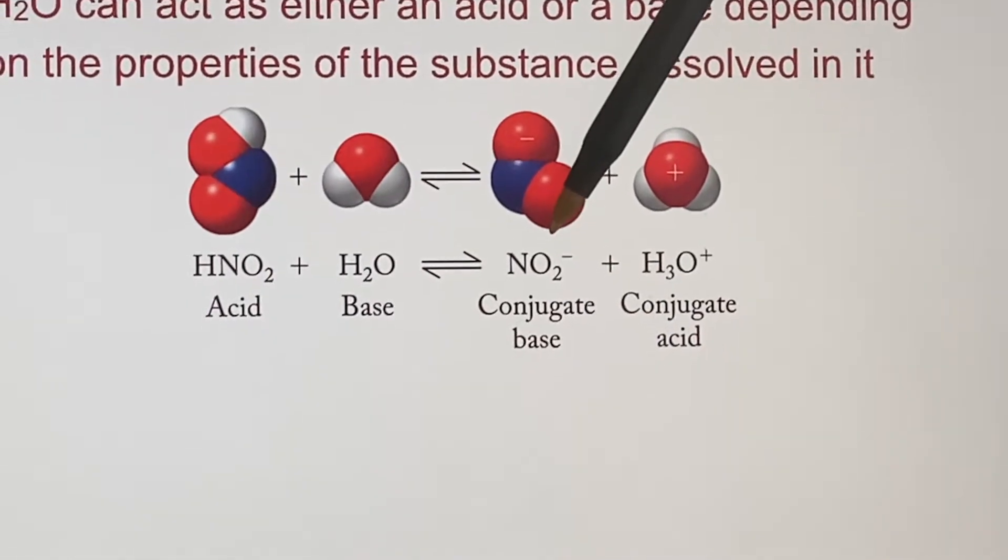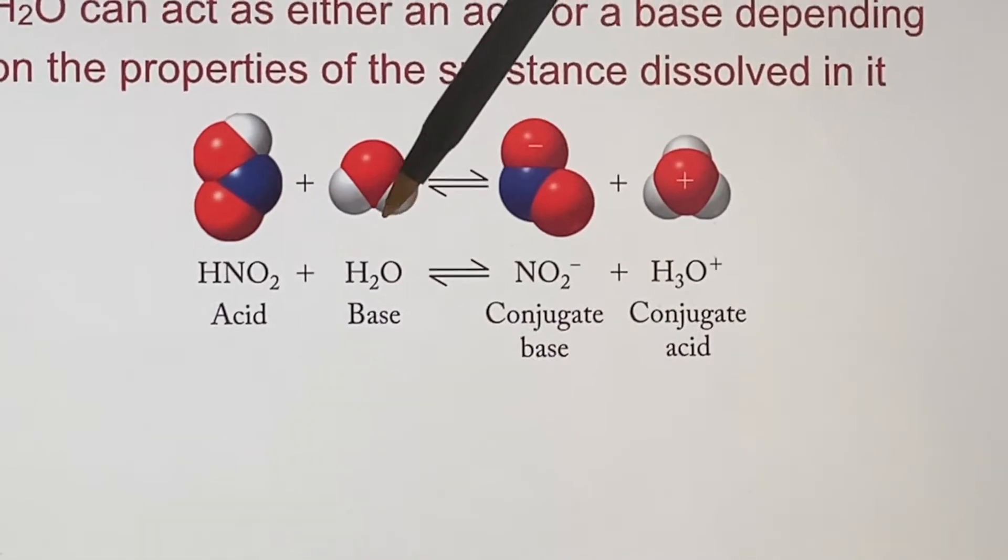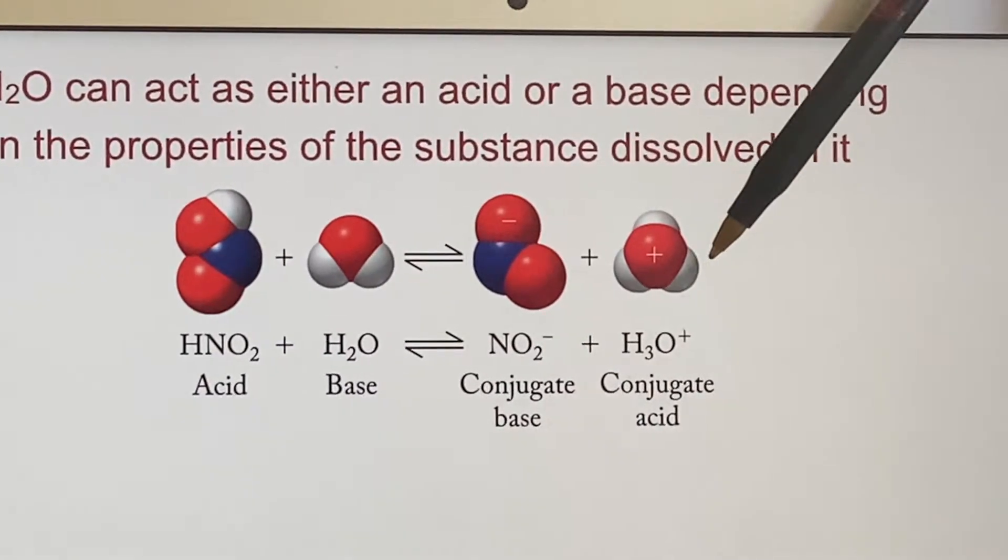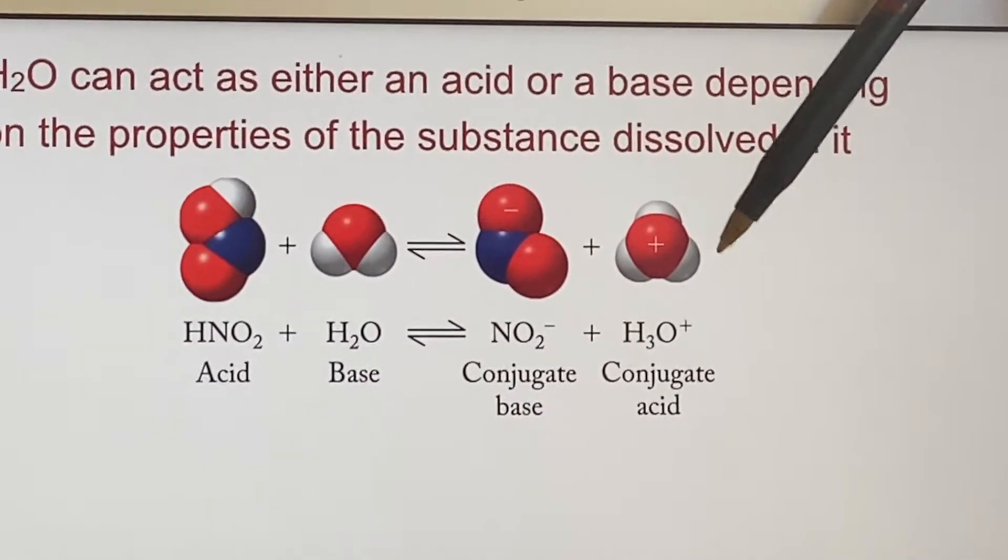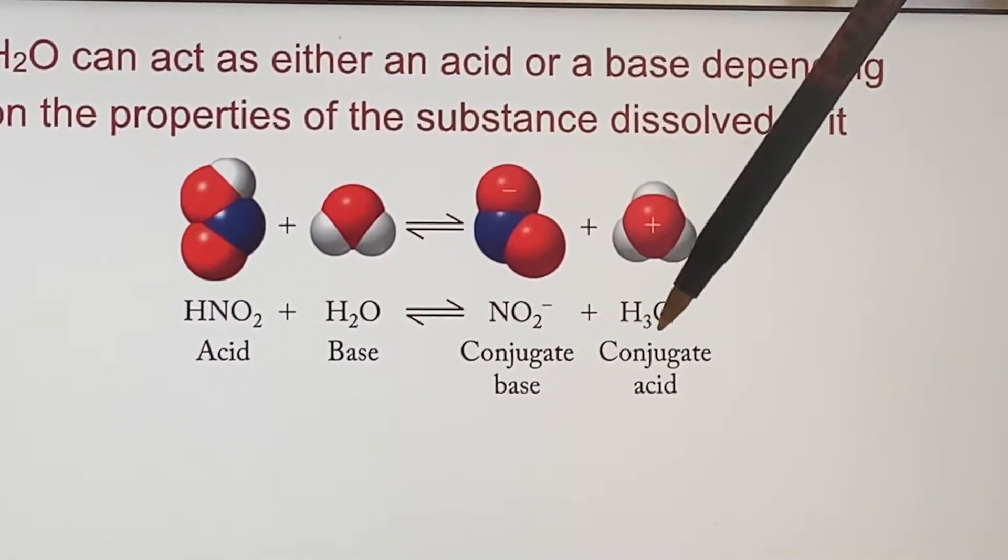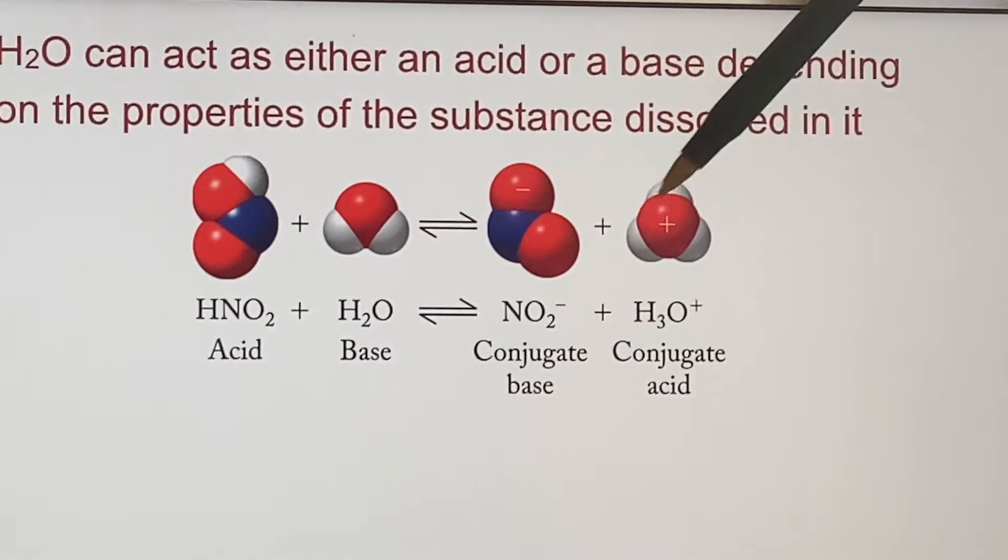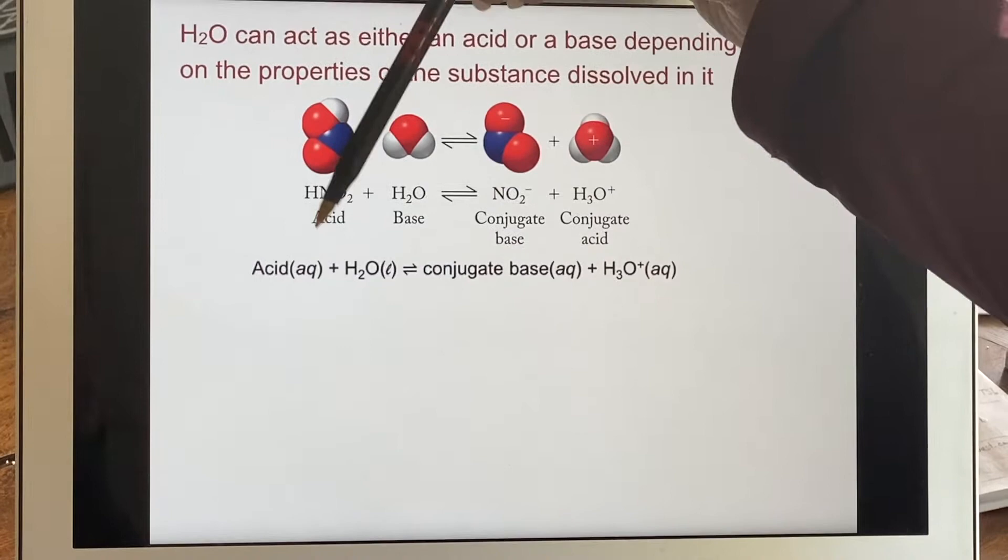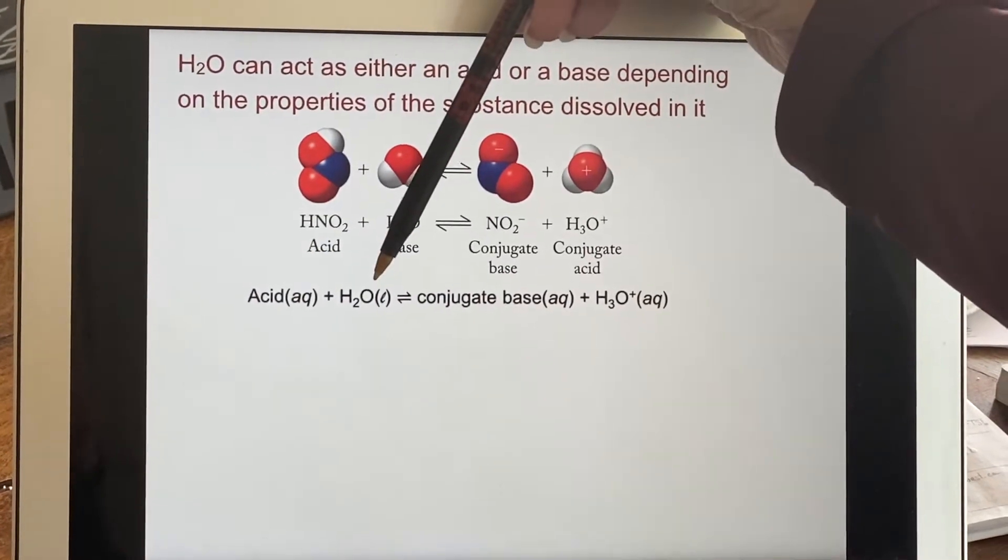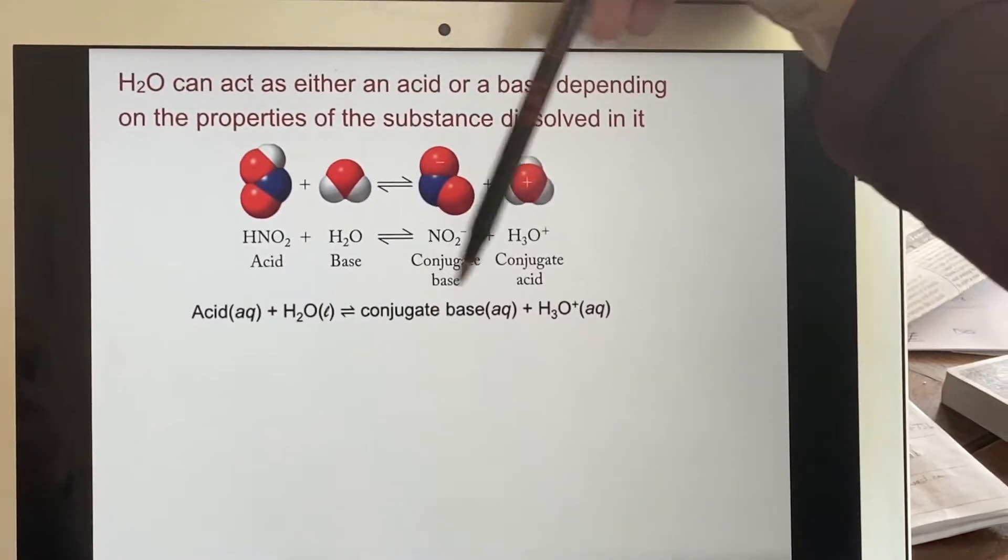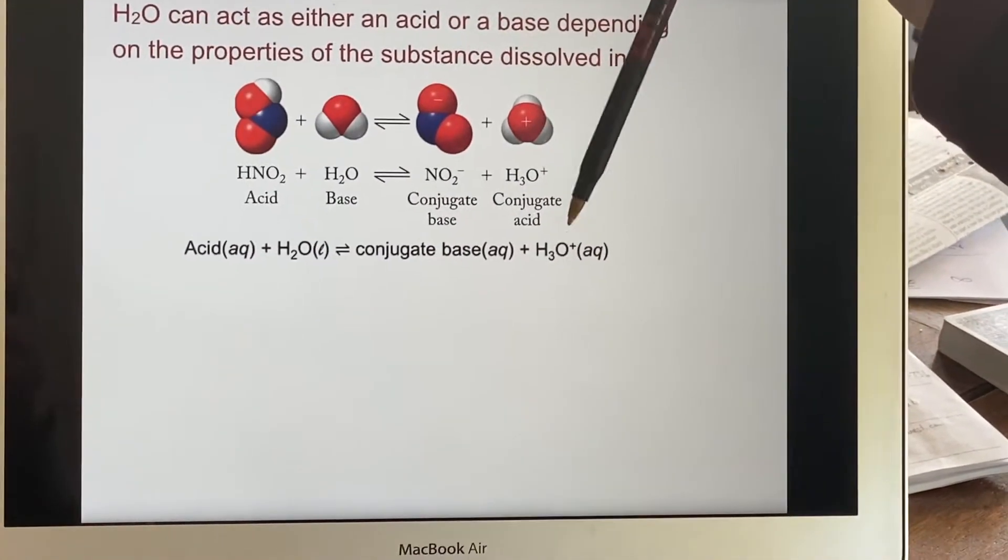That's your acid. That's your conjugate base. This is being forced to accept that H+, forming the hydronium ion. And so when this is acting as a base, on the other side you will see H3O+ as a conjugate acid. So just in general, acid plus water gets into an equilibrium with the conjugate base and the hydronium ion.